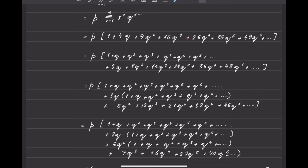The original series 1 plus 4q plus 9q² plus 16q³ plus 25q⁴ plus 36q⁵ plus 49q⁶ is broken into two series. The first is 1 plus q plus q² plus q³ plus q⁴ plus q⁵ plus q⁶. For the remaining terms: originally 4q, I've written q, so I add another 3q; originally 9q², I've written q², so I add another 8q²; originally 16q³ so I add 15q³, then 24q⁴, then 35q⁵, then 48q⁶.